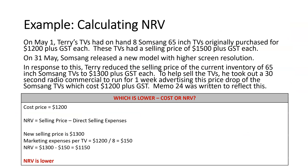Here's an example of how to calculate NRV. On May 1st, Terry's TVs had eight Somsang 65-inch TVs originally purchased for $1,200 plus GST, with a selling price of $1,500. At the end of the month, Somsang released a new model with a higher screen resolution, making Terry's TVs obsolete. In response, Terry reduced the selling price to $1,300 plus GST. To help sell the TVs, he took out a 30-second radio commercial to run for one week advertising the price drop. That advertising campaign cost $1,200.